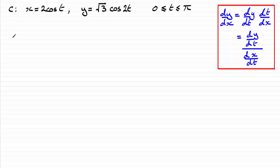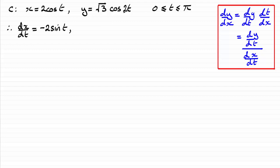Let's start with dx by dt. We differentiate cos t, which gives minus sin t, and multiplying by the constant gives us minus 2 sin t. When it comes to differentiating cos 2t, that's going to be minus 2 sin 2t. Multiplying with the root 3, we get that dy by dt equals minus 2 root 3 times sin 2t.